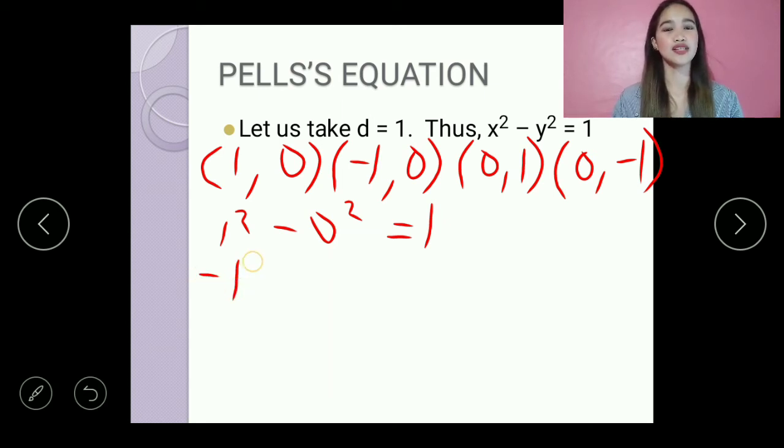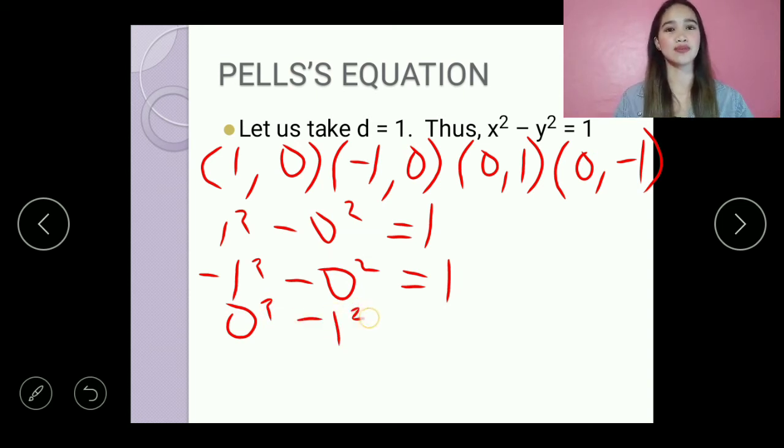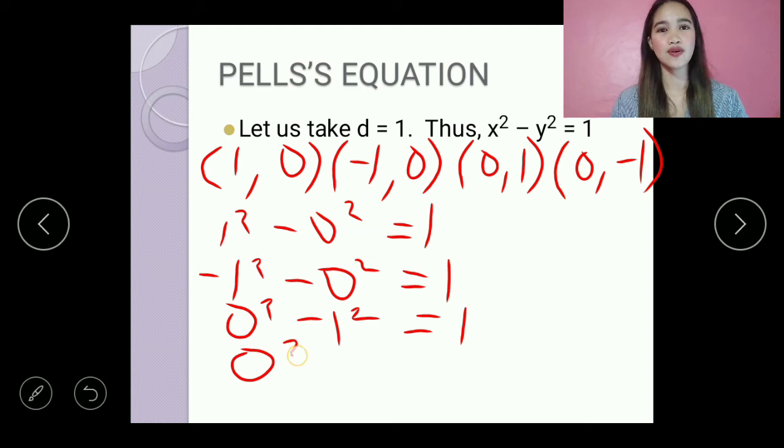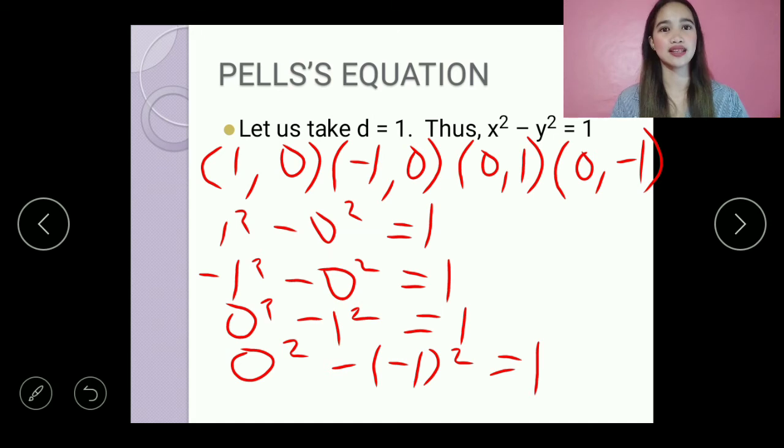Yung x gawin natin 0, at yung y naman gagawin natin 1. So 0 raised to 2 minus 1 raised to 2 is equal to 1. 0 raised to 2 minus negative 1 raised to 2 is equal to 1. So yun na nga yung tinatawag natin na trivial solutions.